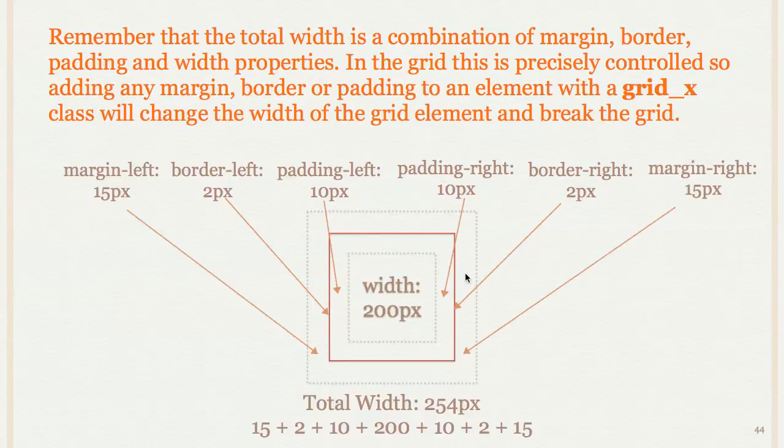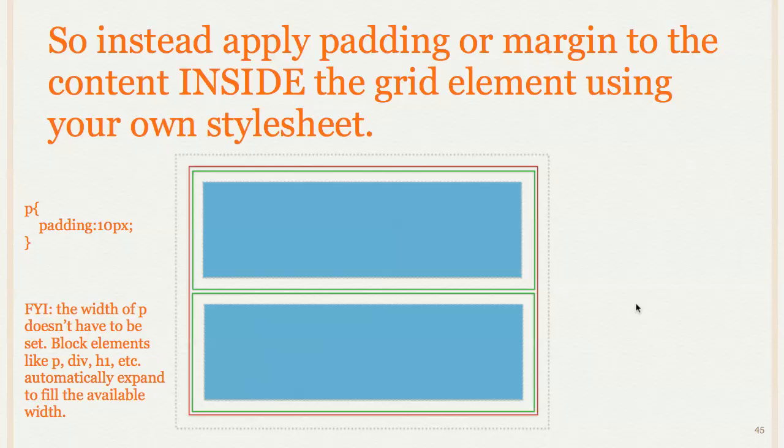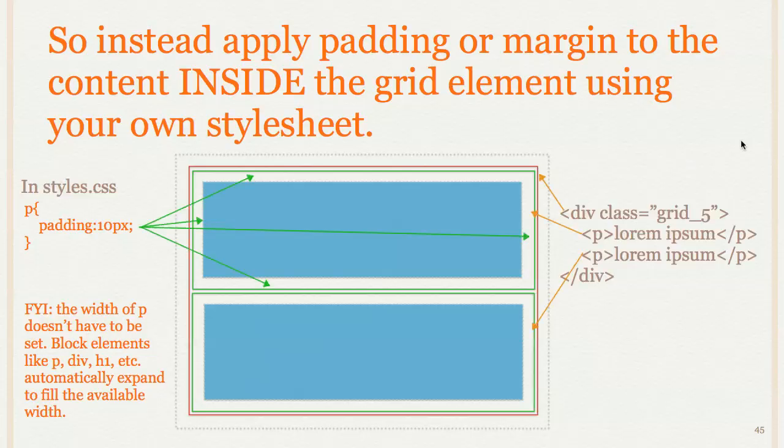So the basic way around that is to, instead of adding your padding and so forth to anything that has a grid class on it, you add it to the content inside of it. So this is something that has a grid class on it. I wouldn't want to add any padding to this div or margins or borders, but I have my paragraph inside of it. I can add my padding to that paragraph and that will space it out. And it won't affect the overall width of anything.